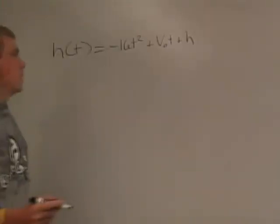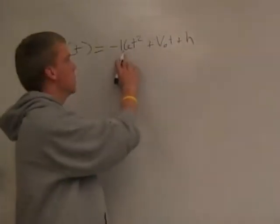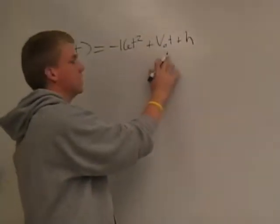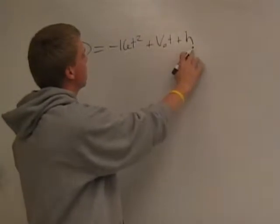The basic equation that we form out of this will be -16t² plus the initial velocity times time plus height.